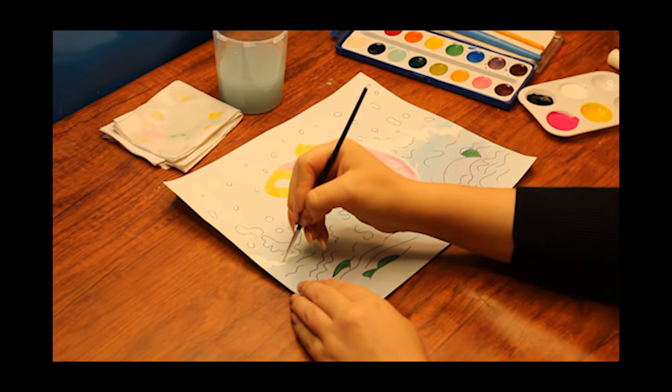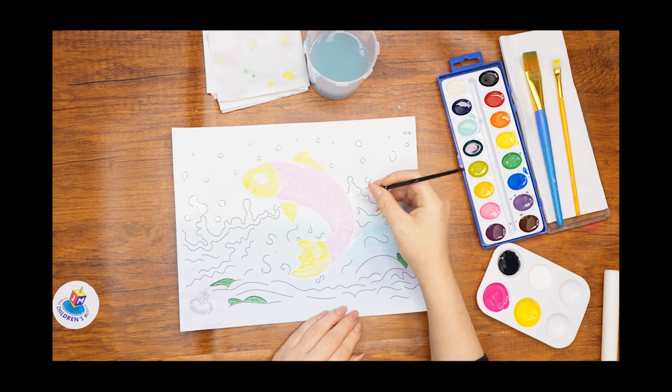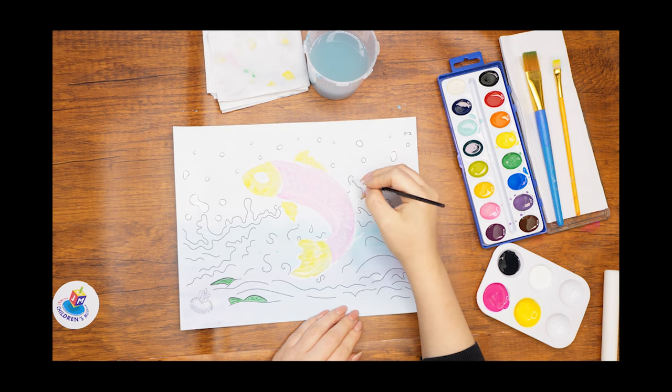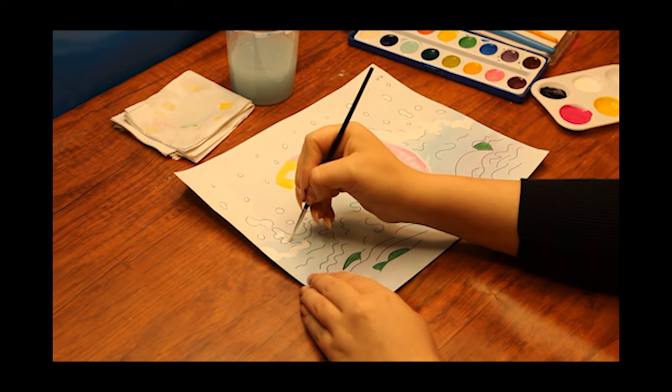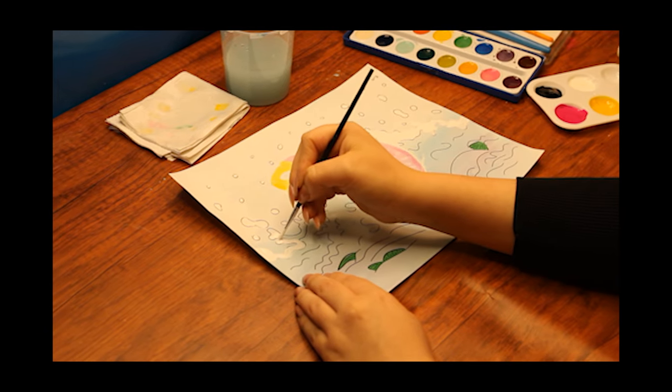First, we'll paint the water splashes using white paint. Fill in each little bubble and the splashes that come out from the water. The paint kind of looks like milk, doesn't it? But last I checked, there isn't any milk in the sea.